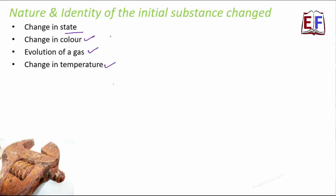Rusting of iron is an example where we notice a change in color as the chemical reaction takes place.